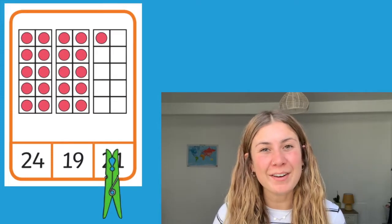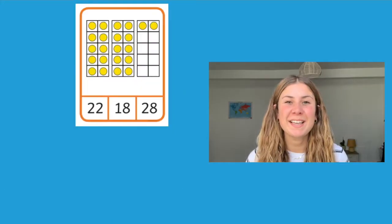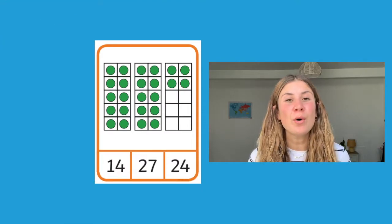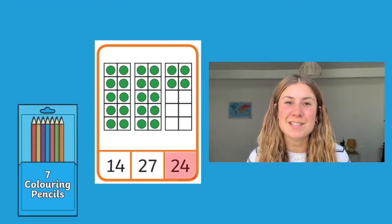Once they've found it they can put a peg on it. Alternatively if you haven't got any pegs at home or in the classroom you could simply get your children to point to the correct answer, they could put a counter on the correct answer or they could even color the correct answer in.